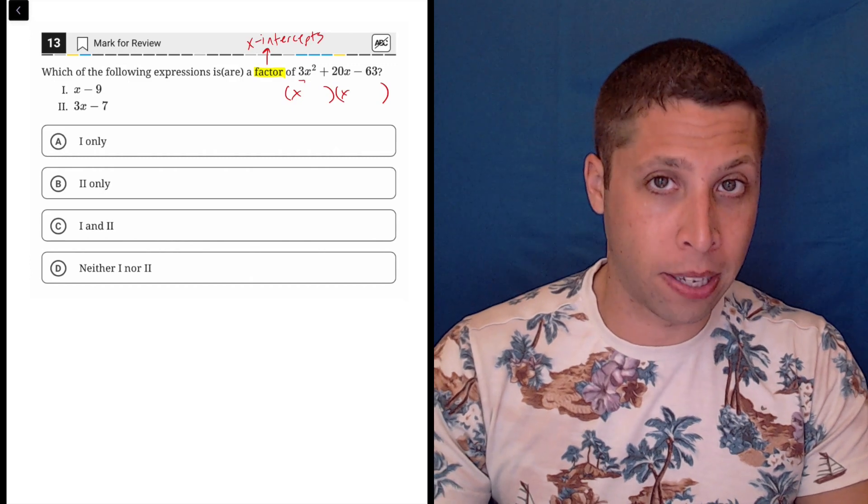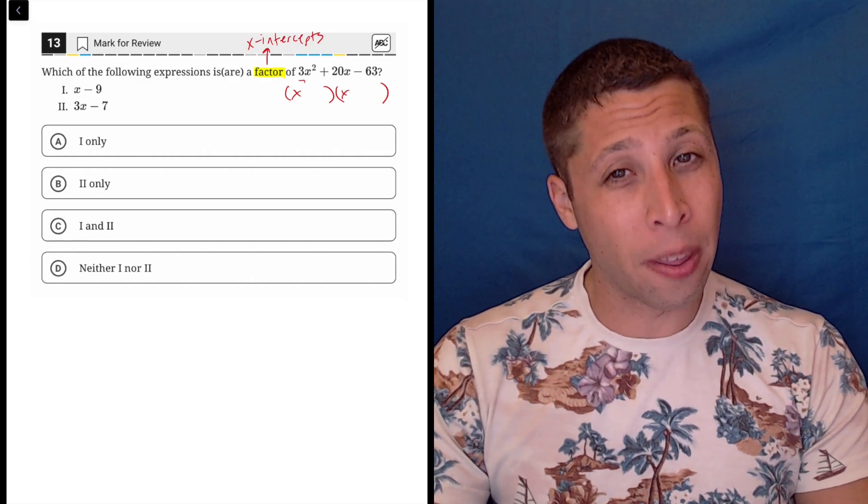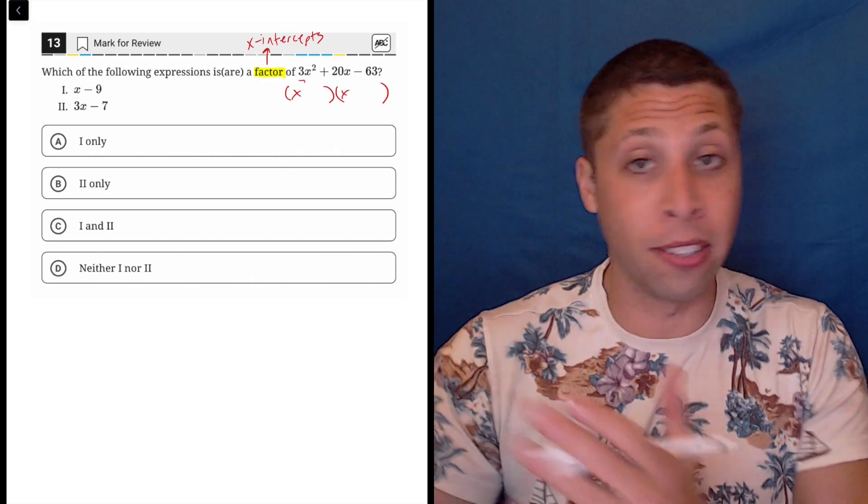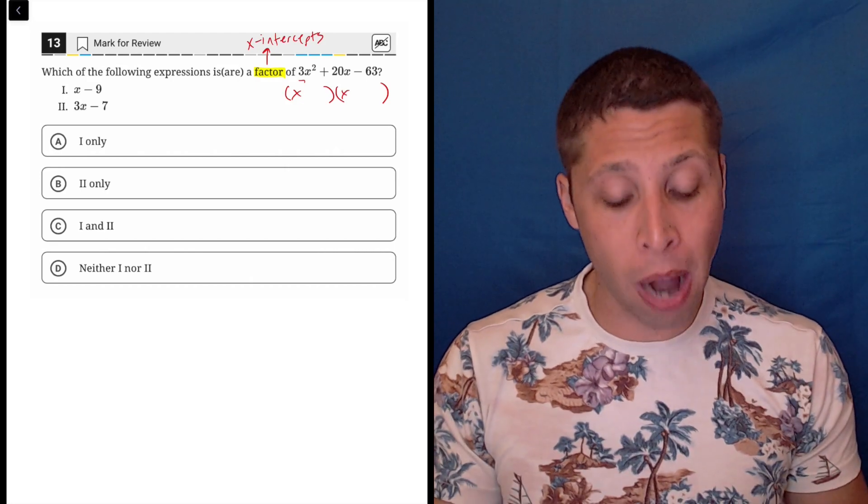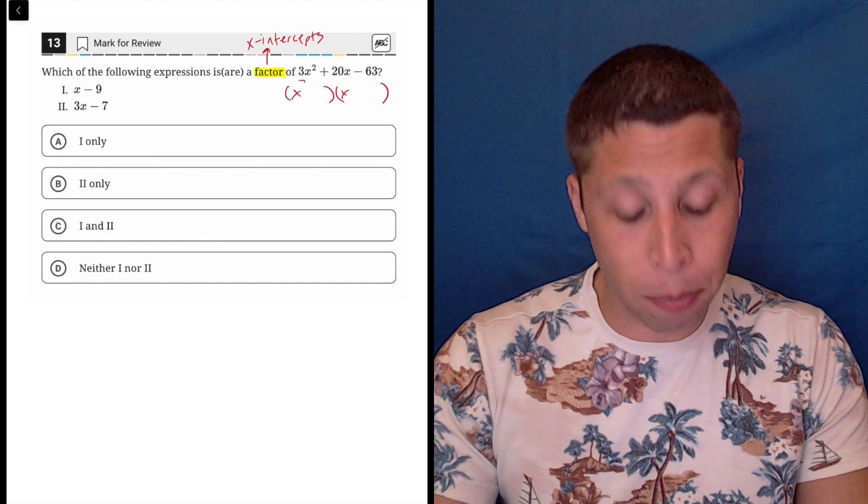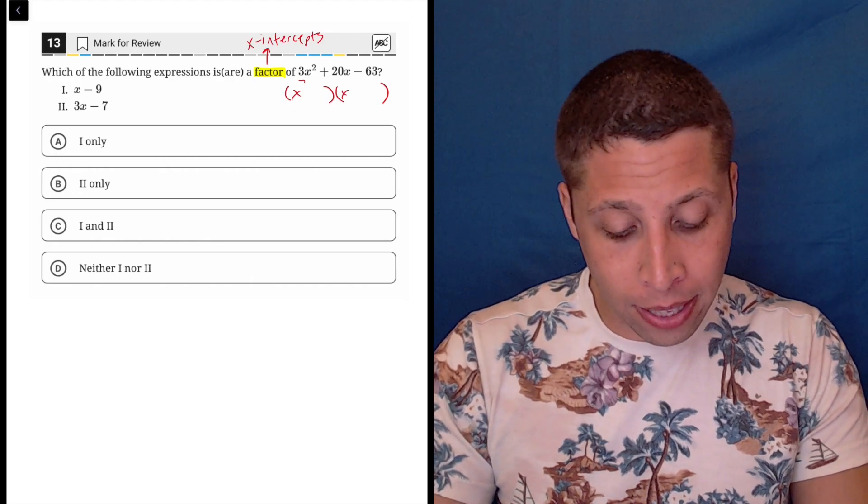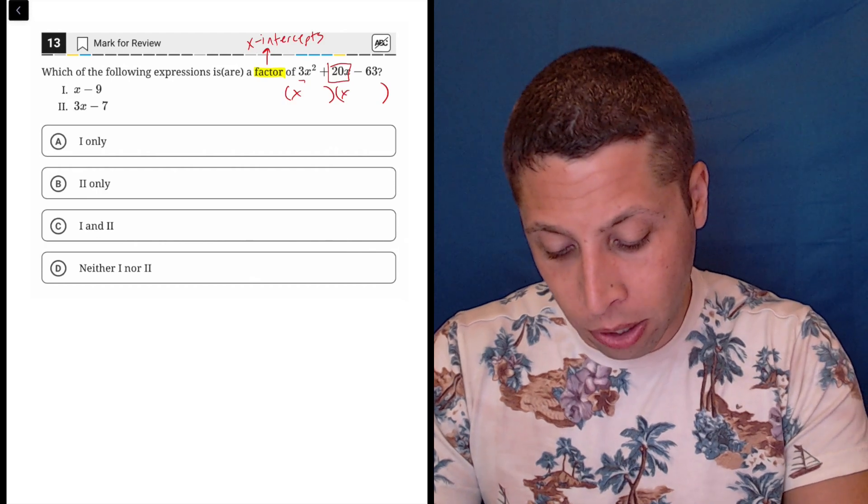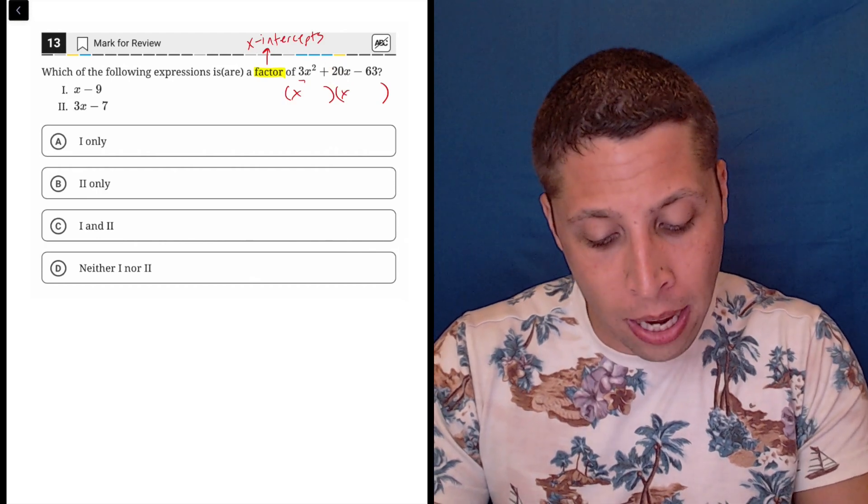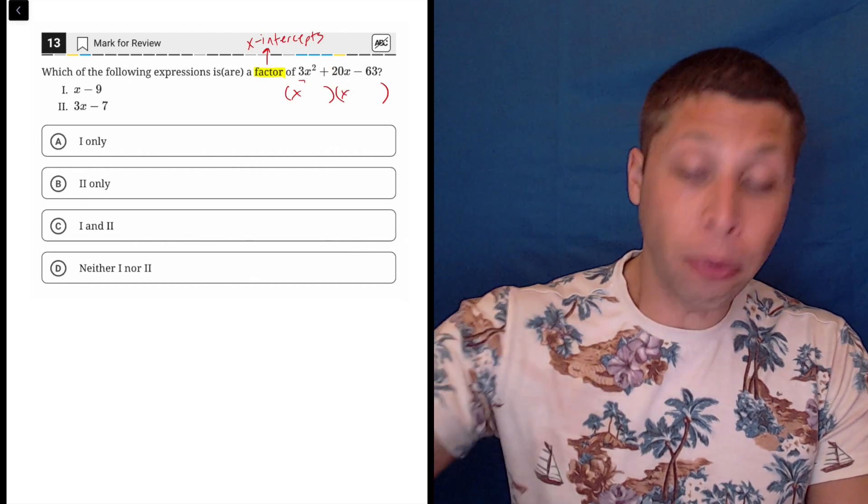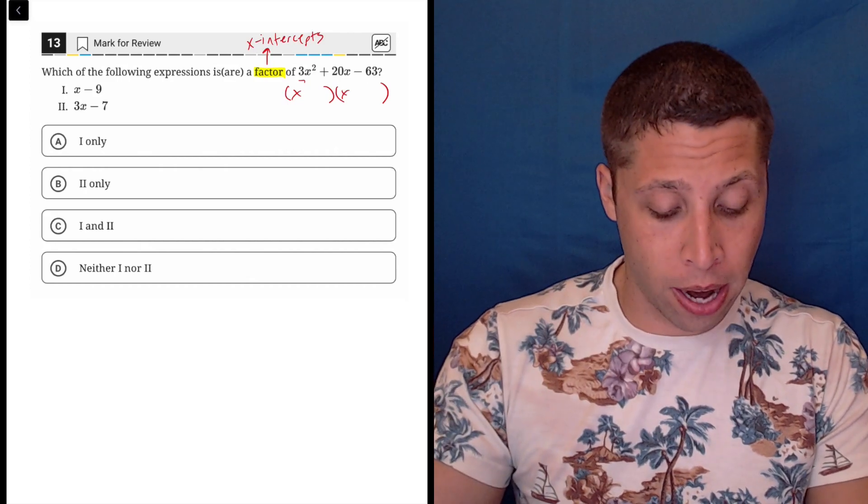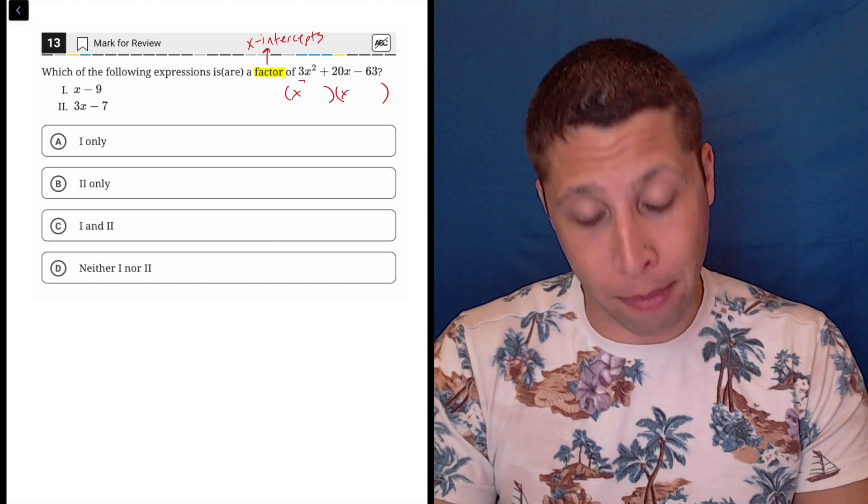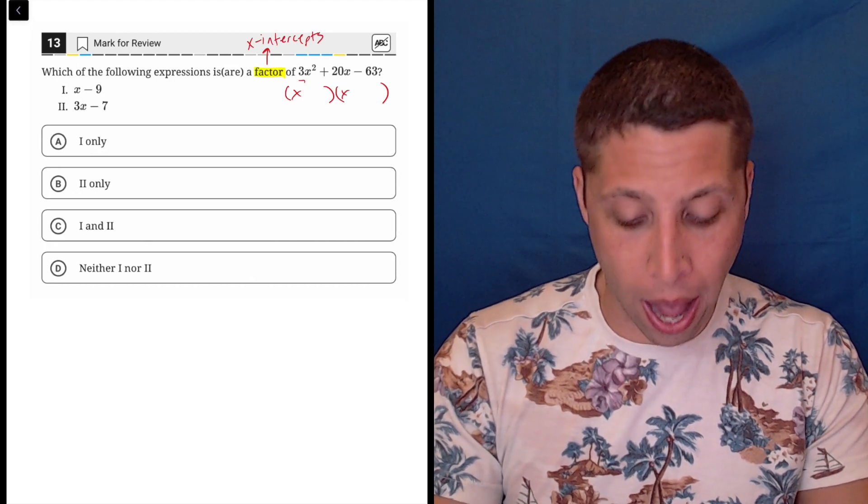First, we have this 3 in front of this x-squared. Unusual that we have that. Normally, we just have nothing there, or a 1 is there. So that makes it easy to factor. Normally, here, it's going to cause a problem. Now, what I could do is try to pull it out, but it's going to kind of conflict with the 20. It's going to conflict with the 20 because I can divide 63 by 3 and kind of GCF it out of there, but I can't divide 20 by 3 and not create a mess. So it doesn't really work that way either.